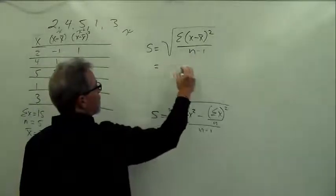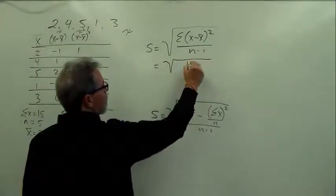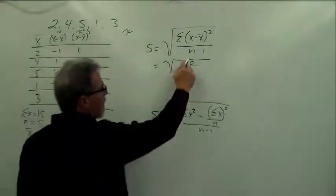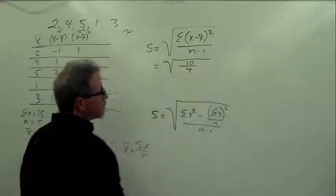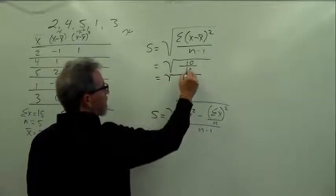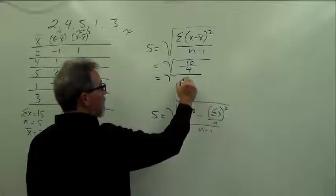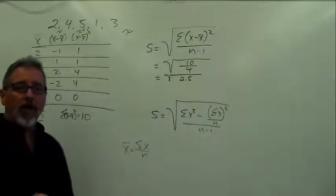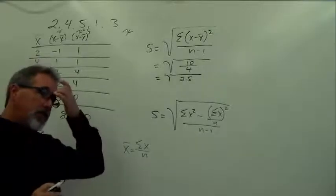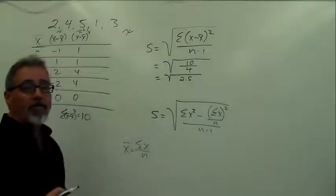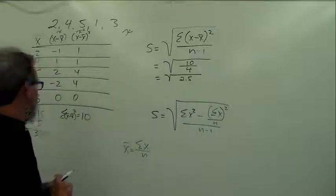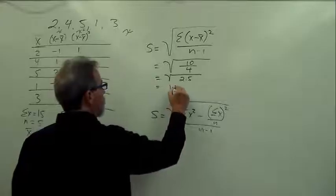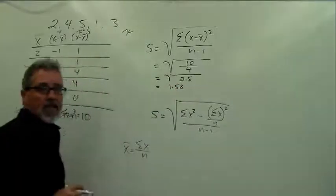So we're going to put 10 right in here. And we know our sample size is 5, 5 minus 1 is 4. So that means we have this value, which is going to be 2.5. And what is 2.5? It's the variance. So if I asked you to solve for variance, you'd stop right here, and 2.5 would be the answer. But we asked to solve for standard deviation, so we're just going to take the square root of this. And the square root is 1.58. That's the solution there.